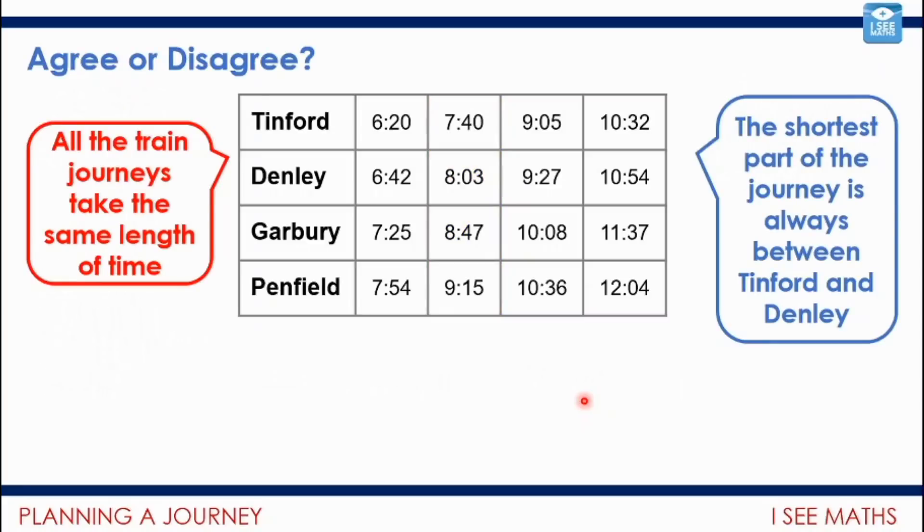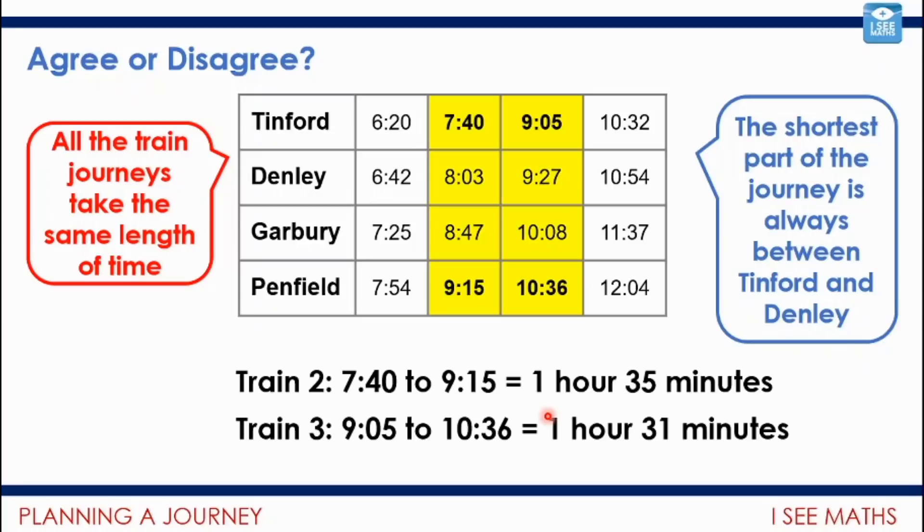Do you agree or disagree with these two statements? The first statement: all the train journeys take the same length of time. Is that true or false? It would seem to make sense because we're going from the same station to the same station. But it's not always true because sometimes it might be because of other trains coming in or maybe different times of the day. Let's have a look. Train two takes an hour and 35 minutes. But train three is actually faster. It only takes an hour and 31 minutes.